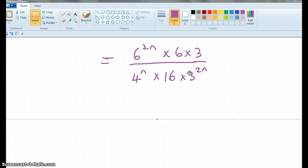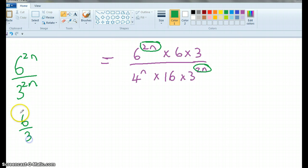Now, next step. Now what I'm going to do is spot the 2n here and the 2n here. So if I had 6 to the power of 2n over 3 to the power of 2n, I've actually got 6 over 3 to the power of 2n. And 6 divided by 3 is 2, so I've actually got 2 to the power of 2n, which is pretty awesome. So I'm going to go 2 to the power of 2n there. And then I'm just going to leave 6 times 3 as 18.